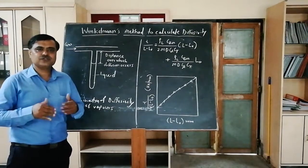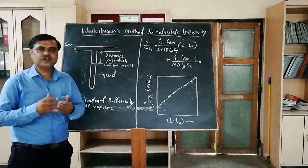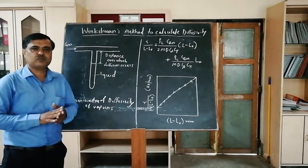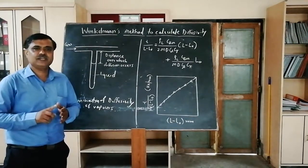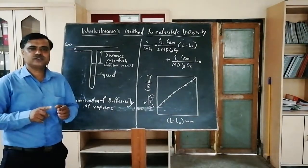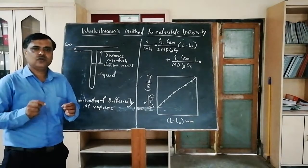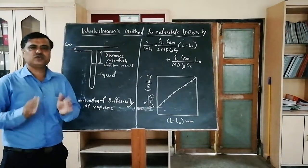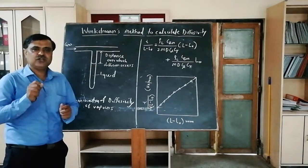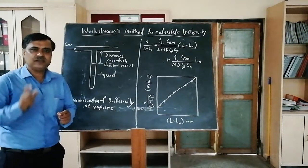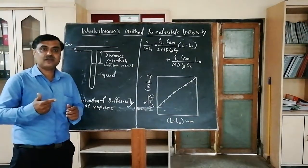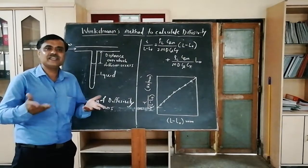Fick's law of diffusion states that flux is directly proportional to the concentration gradient, and the constant of proportionality is the diffusivity. That is: Ja = −Dab × (∂Ca/∂Z), where ∂Ca/∂Z is the change in concentration with respect to the distance through which diffusion takes place. Here Dab is the diffusivity of component A in B. Once diffusivity is calculated, mass transfer can be easily determined.